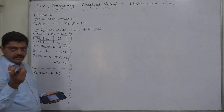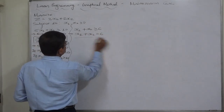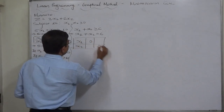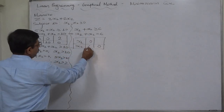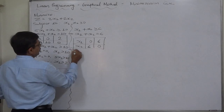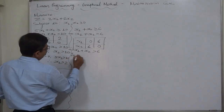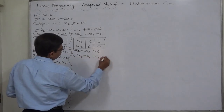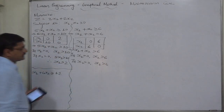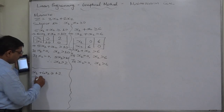Second constraint: x1 plus x2 greater than or equal to 6. Equality part — x1 plus x2 equals 6. Two points to draw the line: if x1 is 0, x2 equals 6; if x2 is 0, x1 equals 6. Inequality part — x1 plus x2 greater than 6: if x1 is 0, then x2 is greater than 6; if x2 is 0, then x1 is greater than 6.